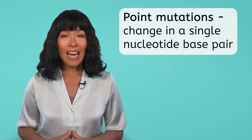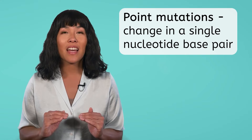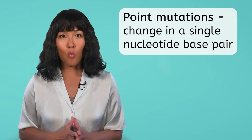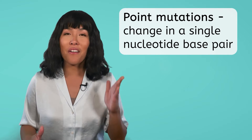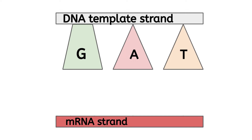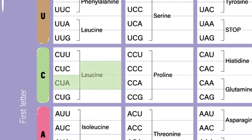The first type of mutation we'll talk about is the simplest type to understand: point mutations. These mutations only involve a change in a single nucleotide base pair, and the simplest type of point mutation is substitution, where one base takes the place of another. For example, if our DNA template strand has the codon GAT, it would be transcribed with the mRNA codon CUA. During translation, this would make the amino acid leucine.